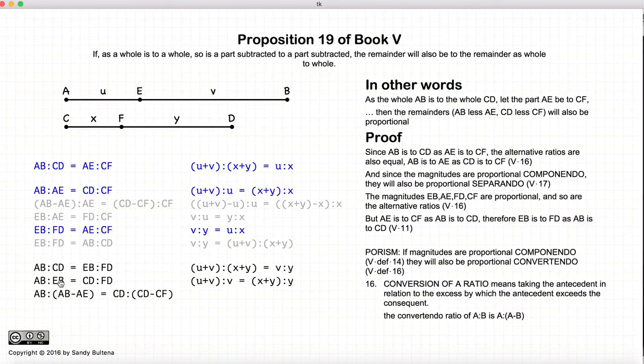But what is EB? EB is AB minus AE. FD is equal to CD minus CF. So if we look at these two relationships here, just let me highlight them for a moment. This one and this one.